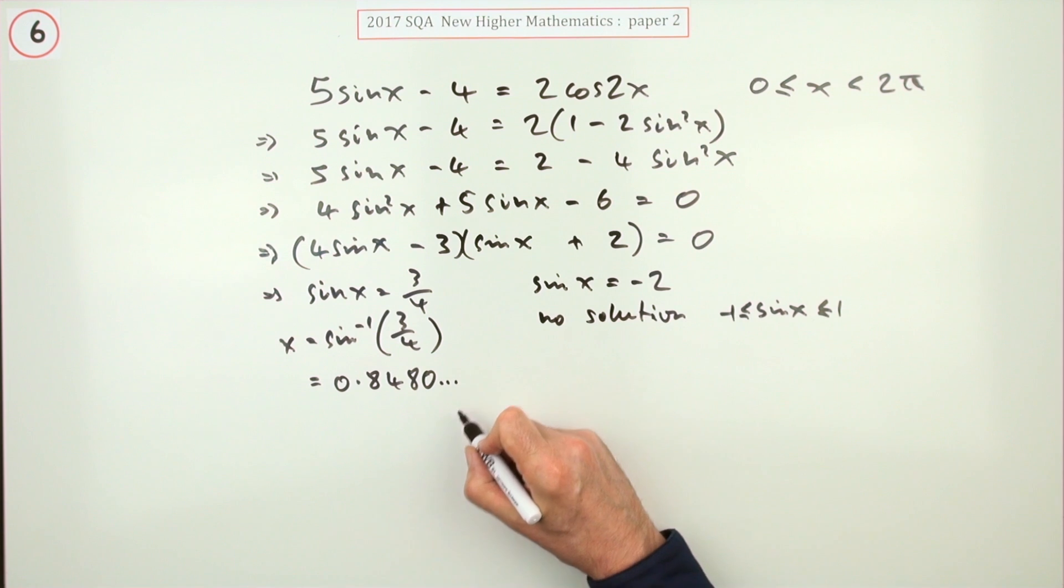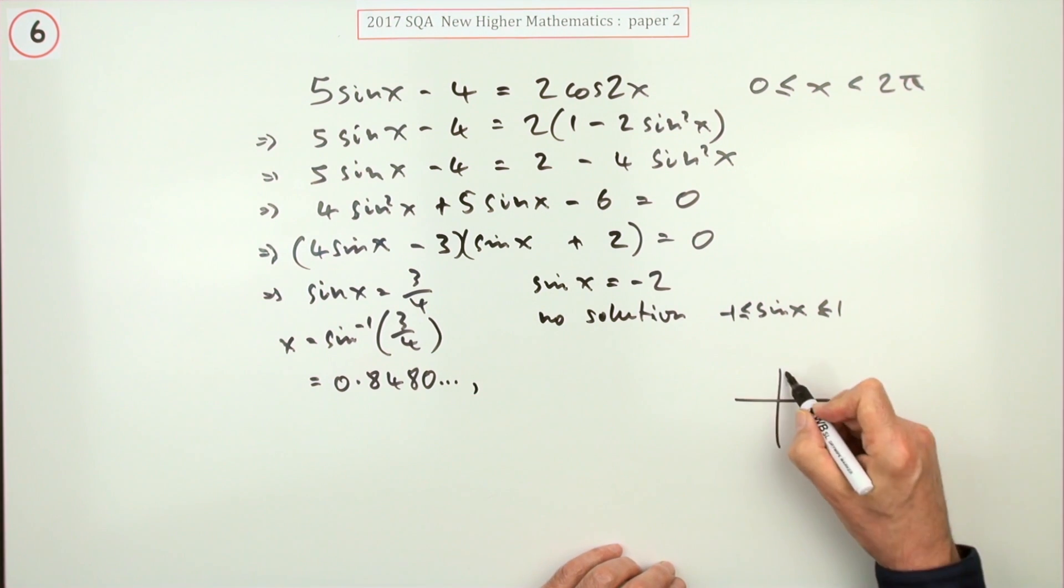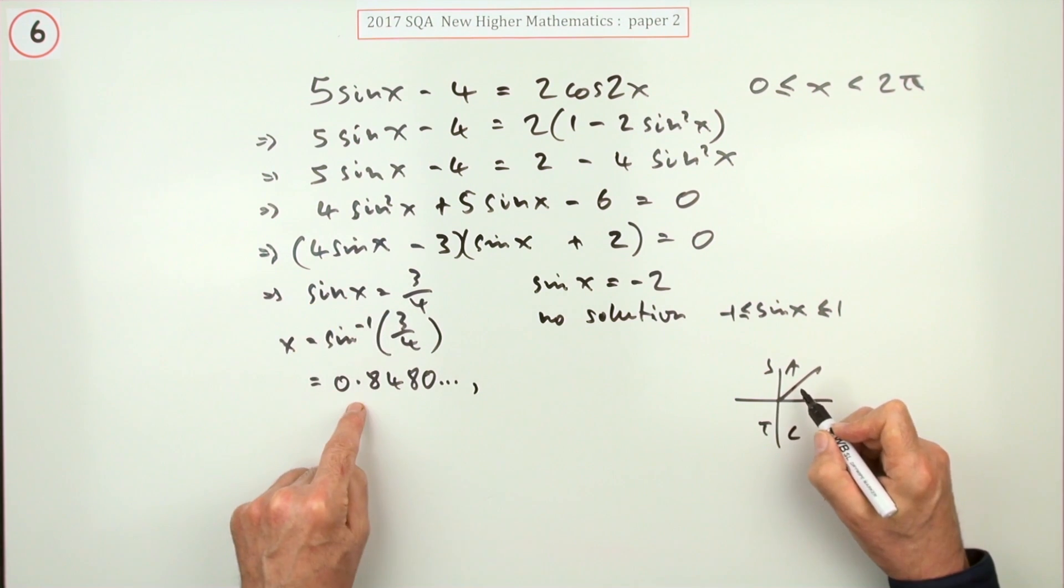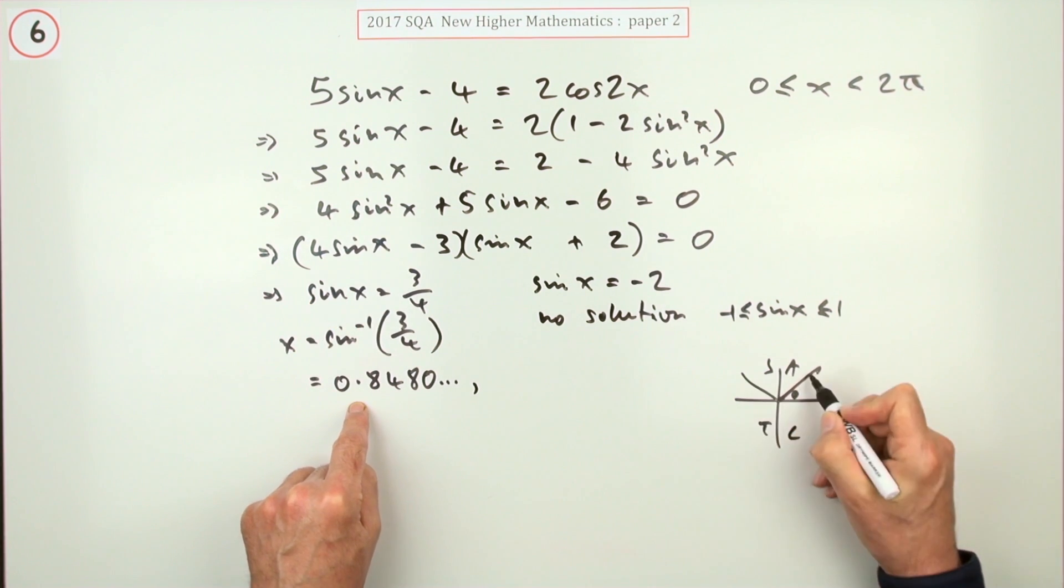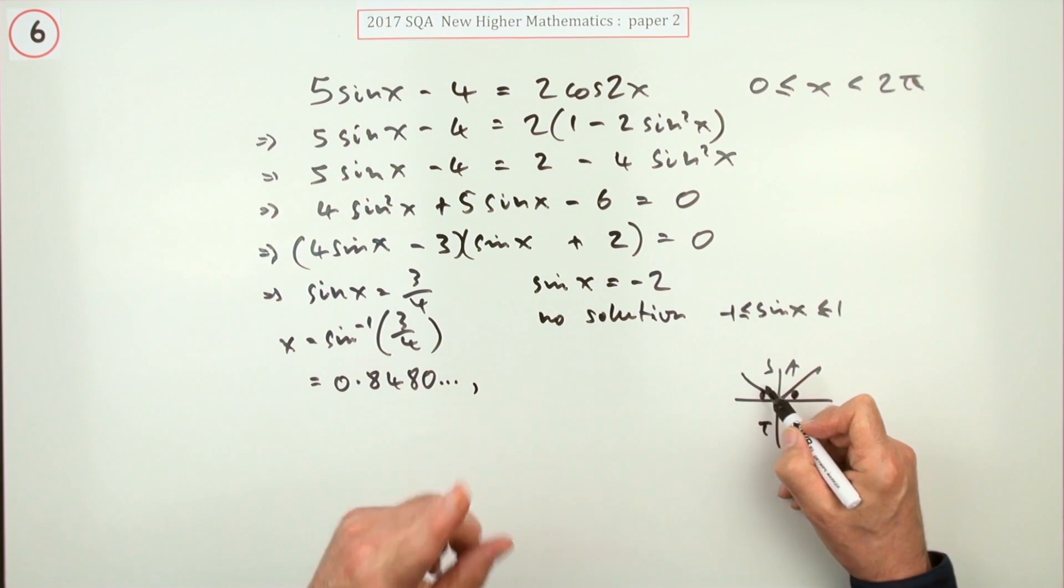But that's only one answer. The other answer will be—you can either just draw the little CAST diagram: all, sine, tan, cos. The sine is positive, so either this acute angle is here in the first quadrant or it's here in the second one. And if it's in the second one, it's short of 180, or if I'm thinking in pi, thinking radians, it's short of pi.